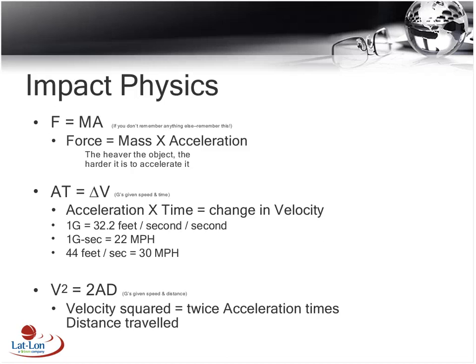A useful number to keep in mind: as Gs span over time, they add up in miles per hour. One G applied for one second will cause something to go from 0 to 22 miles per hour. So if you jump off a high dive, one second later you're going 22 mph, two seconds later 44 mph. That's handy when looking at Gs on a rail car and trying to correlate what speed was involved prior to the coupling event.